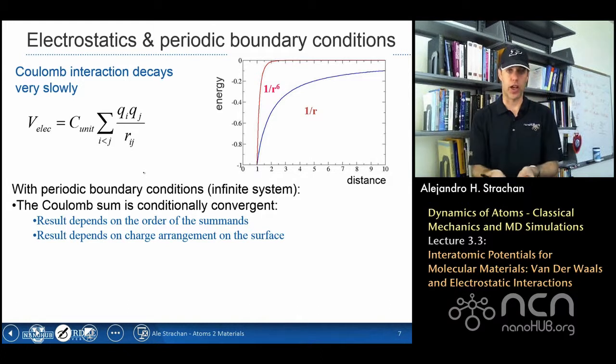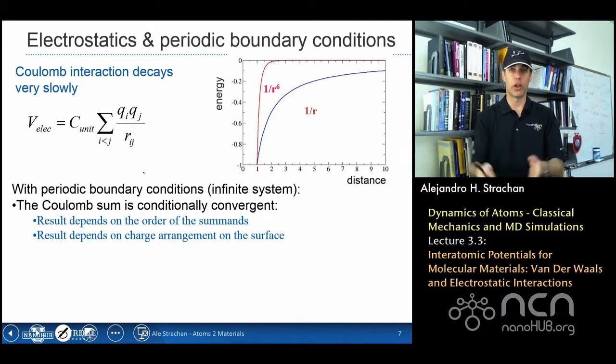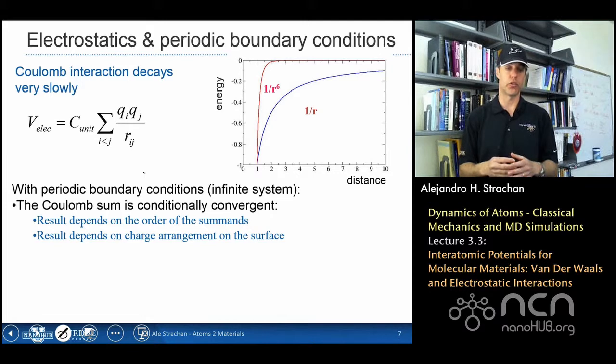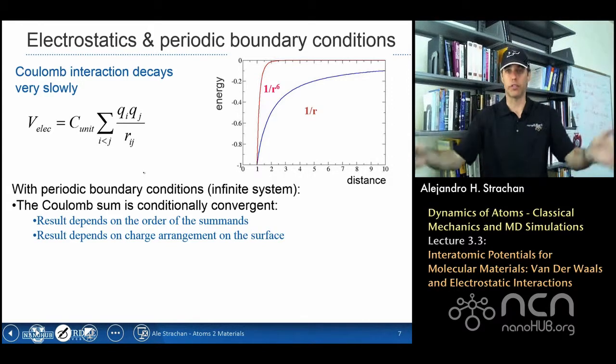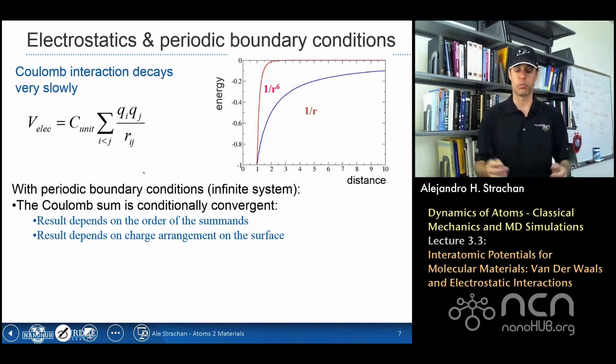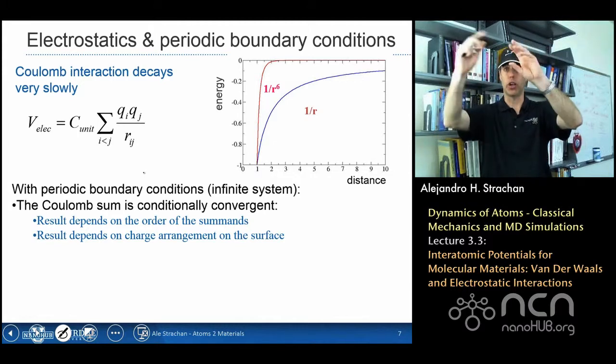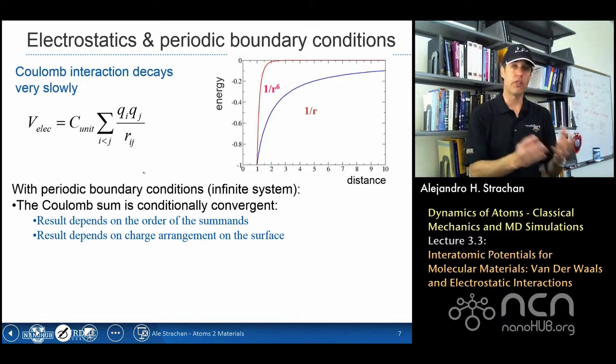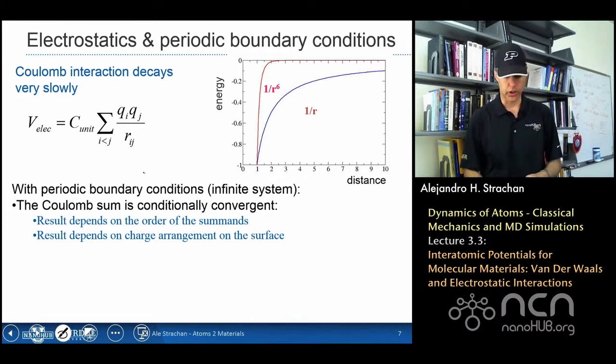The interaction is going to decrease with 1 over r. So that means that the number of atoms, r squared, times the interaction, 1 over r, is going to grow as I move to bigger and bigger concentric shells. So the last shell has a bigger effect than all previous shells, and then every new shell contributes more to the total sum than all the previous ones. So the actual arrangement of the atoms, how I define these concentric shells influences the result of these sums.